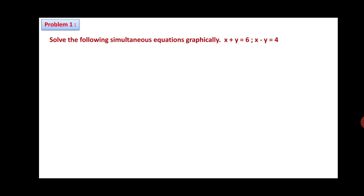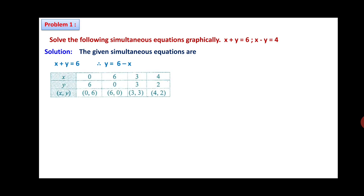Problem 1: Solve the following simultaneous equations graphically. Equation 1: x plus y equals 6. Equation 2: x minus y equals 4. We prepare a table and plot those points on the graph. For the first equation, y equals 6 minus x. Substituting different x values: if x is 6, y is 0; if x is 0, y is 6; if x is 3, y is 3; if x is 4, y is 2. These coordinates are plotted and the four points are joined to get a straight line.